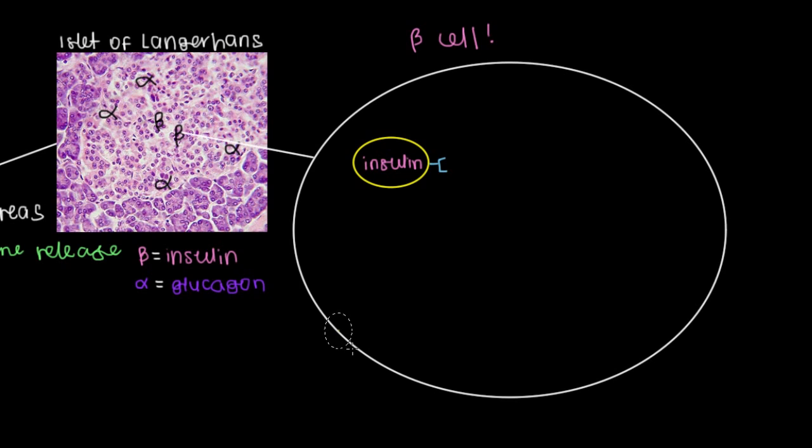The other thing that's unique about beta cells is that they have these potassium channels. So potassium channels that allow potassium to leave beta cells through facilitated diffusion. So they're just naturally leaving the beta cell over time.